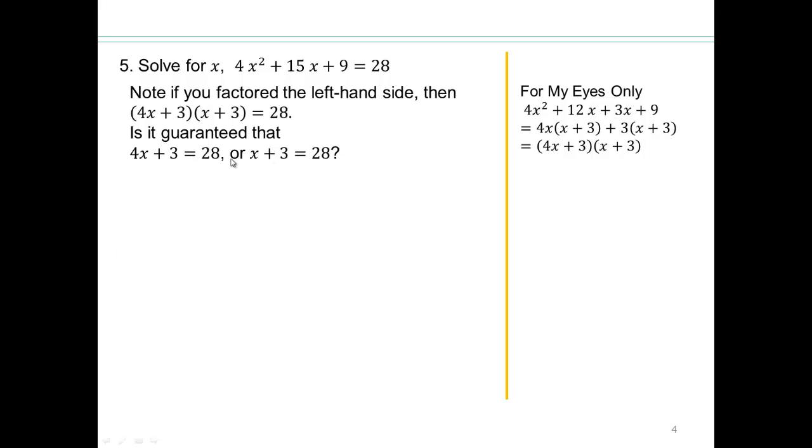Can I say one of these things have to be 28? Just like we saw when we had zero property, if the product is zero, you can say either the first factor is zero or the second factor is zero. So here I'm asking you, can I say the first factor is 28 or the second factor equals 28? What do you think? Think about that. Pause the video and think.